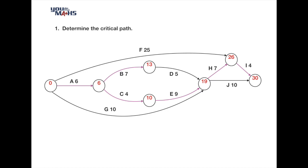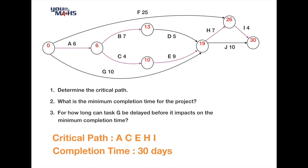As you work through the network finding the minimum completion time, leave a trail of the tasks that contribute to that time at each node. We've done that here in purple, showing a continuous trail from start to finish - this represents the critical path, where any delays would result in a delay to the whole network. In this case the critical path is tasks A, C, E, H, and I, totalling 30 days.